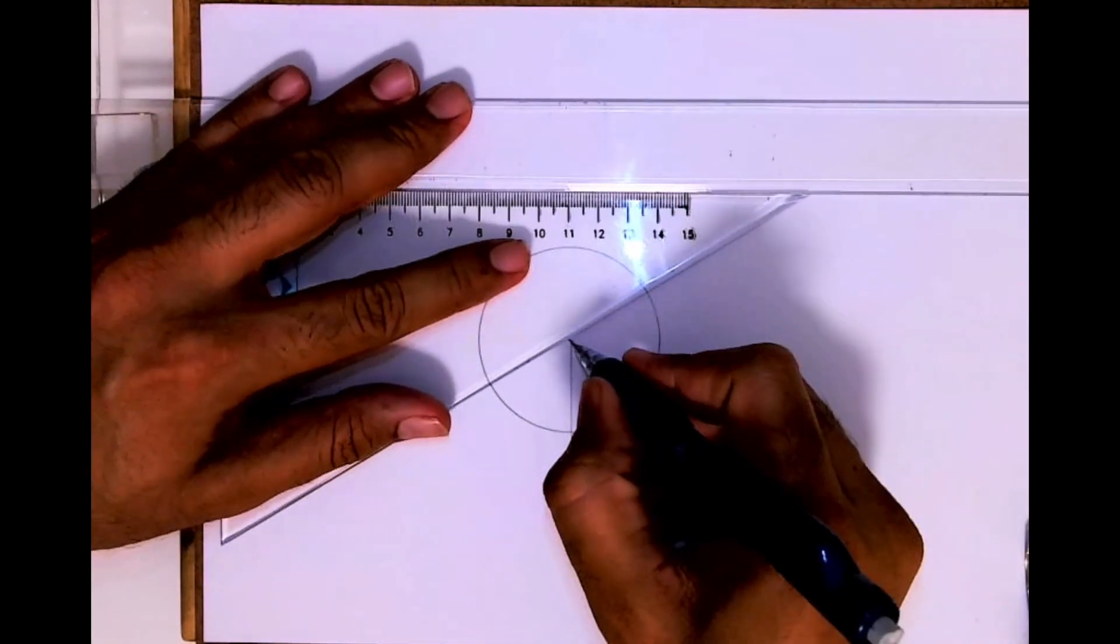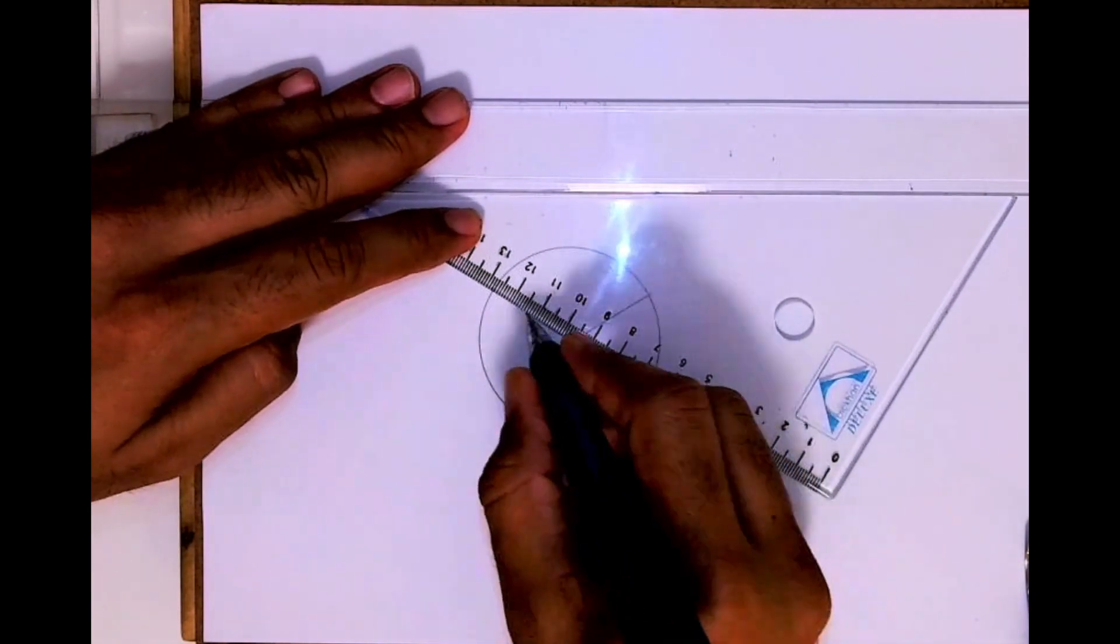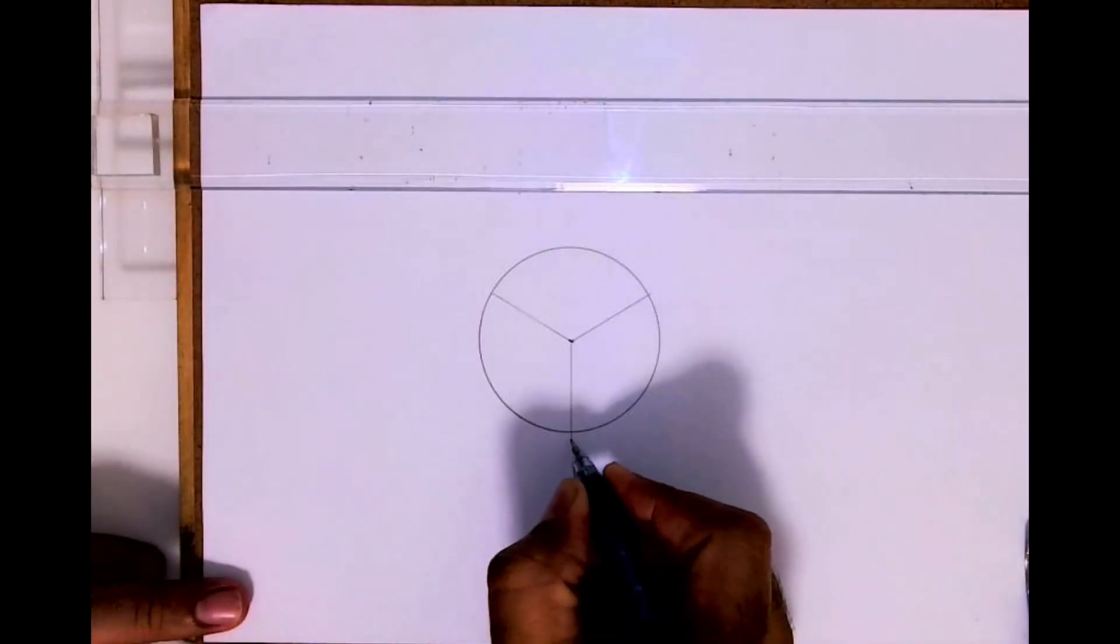360 divided by 3 would be how much? 120, 120, 120. So I will divide circle into three parts.